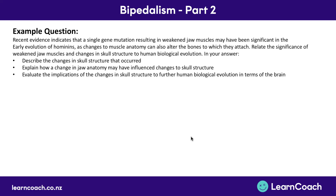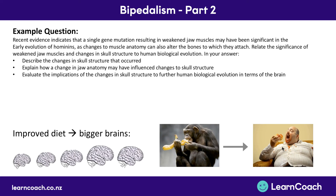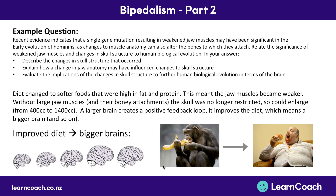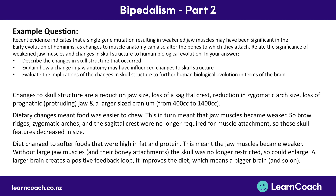Finally, we need to evaluate the implications of these changes for further human biological evolution in terms of the brain. Changing to those softer, fattier foods — high in fat and protein — meant that the jaw muscles became weaker. Without those large jaw muscles and their bony attachments, the skull is no longer restricted, because you don't need all those extra features taking up space. Therefore the cranium can enlarge from 400 cc's to 1400 cc's. That larger brain creates a positive feedback loop: you can improve the diet because you're smarter, which means a bigger brain, which means better food, and the cycle continues. So that's what you'd write for the final part — evaluating the implications of those changes in skull structure. If you put all three paragraphs together, this is what the final answer would look like: describing the changes, explaining the impact on structure, and evaluating how it actually affected the brain. And this is Bipedalism Part 2.